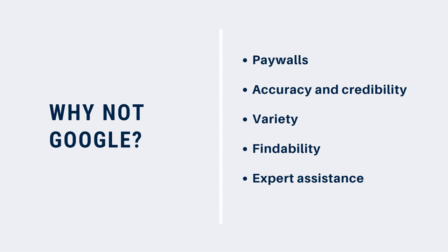Third is variety. When most people think of a library, they think books. The Parrott Center does have books, but we also provide access to other kinds of resources, including peer-reviewed articles, newspaper and magazine articles, streaming video, ebooks, and so much more.